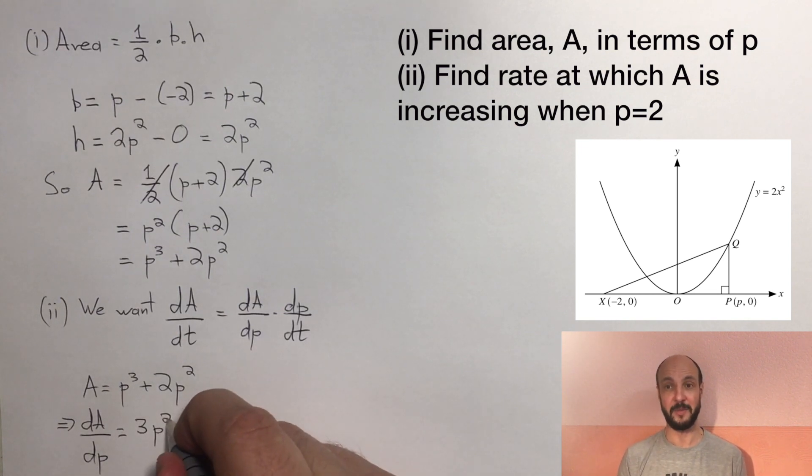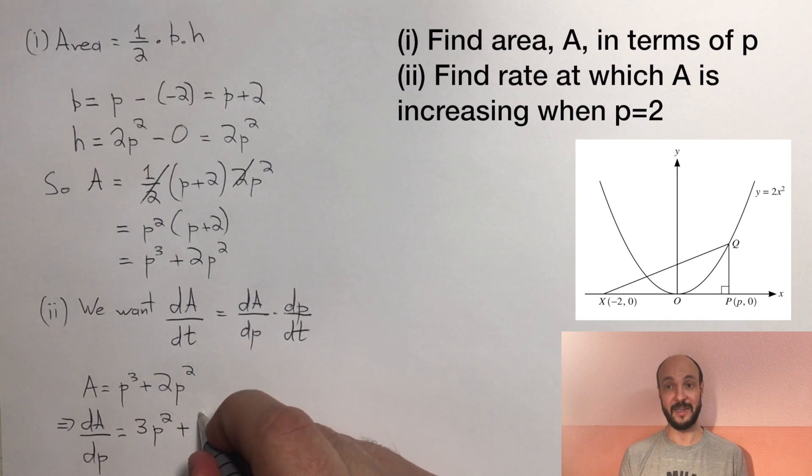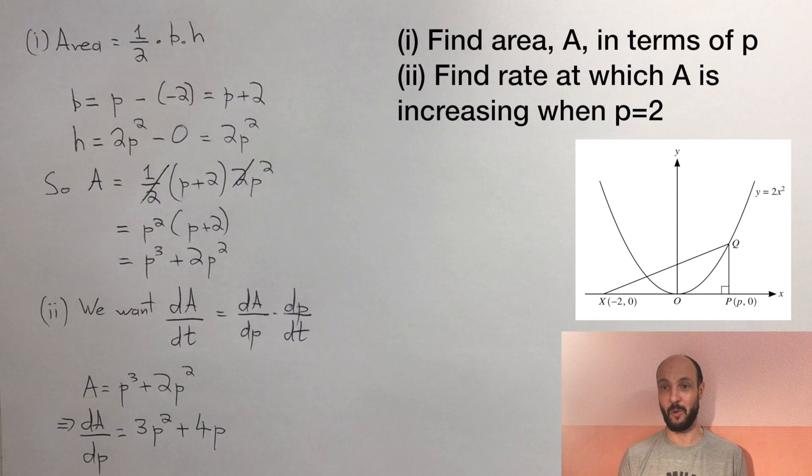So the differential of p cubed, we multiply by the power and take 1 from the power, is 3p squared, plus the differential of 2p squared, we multiply by the power and take 1 from the power, so 4p. So the change in area as we change p is 3p squared plus 4p.